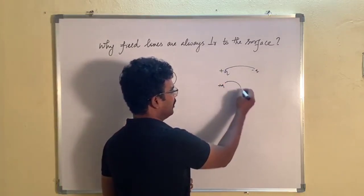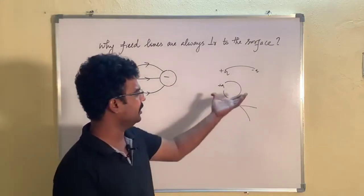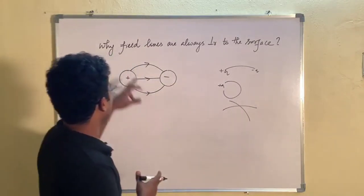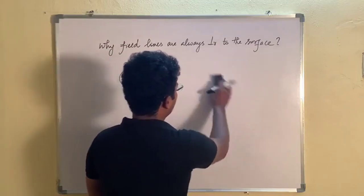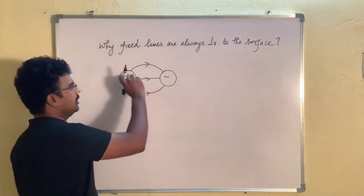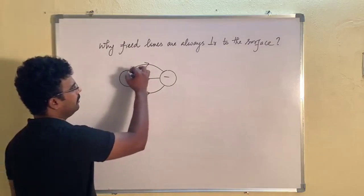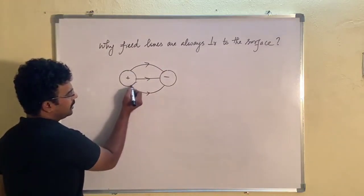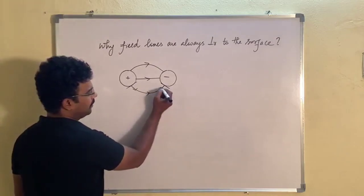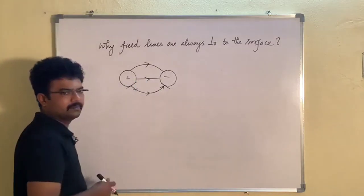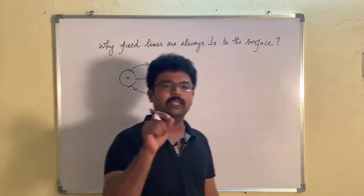Field lines are always perpendicular to the surface. If you look at the diagram in the book, the tangential is perpendicular. Minus is inward, positive is outward. That's why it is perpendicular.